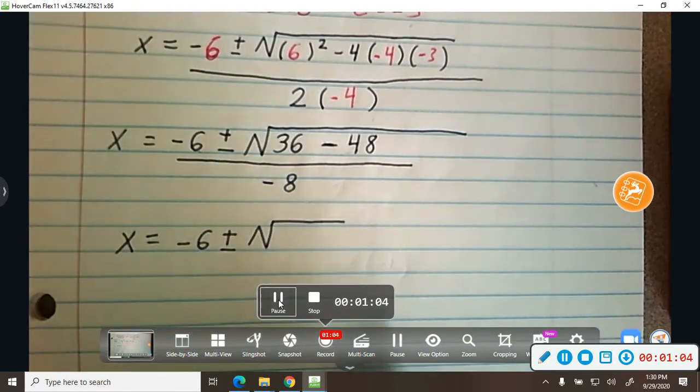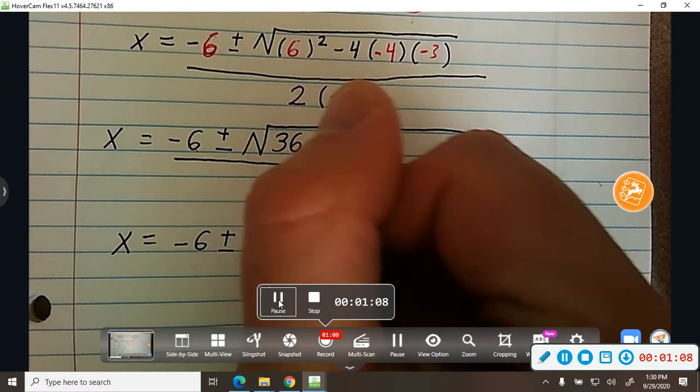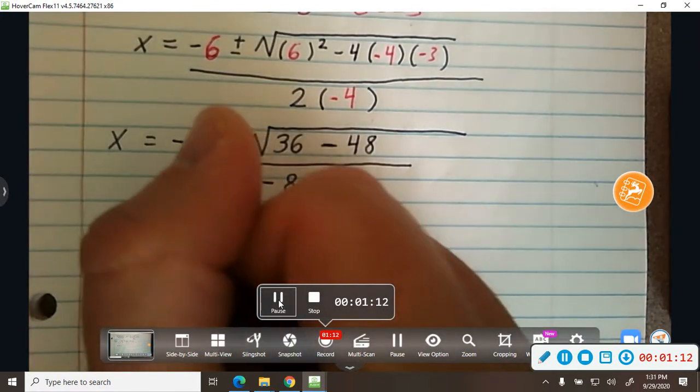Now from there, I take 36 minus 48, which is negative 12, and I put that over negative 8.